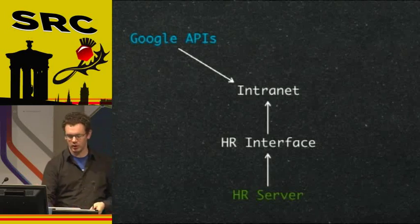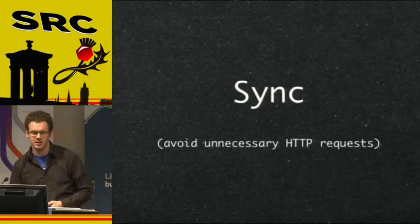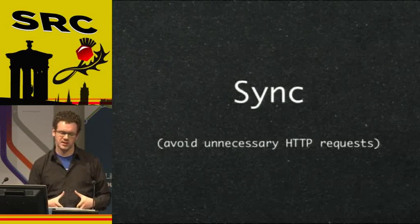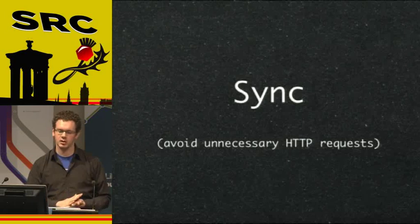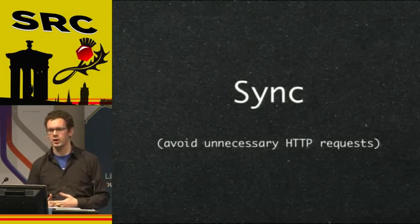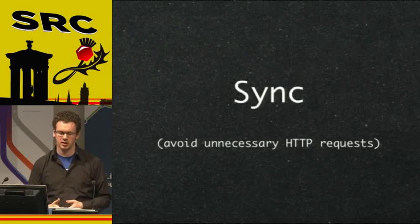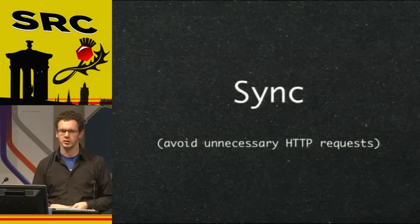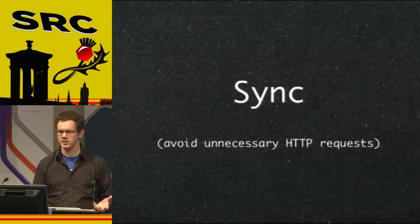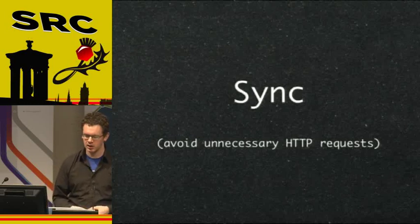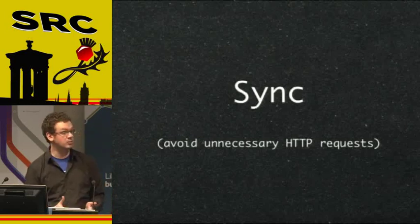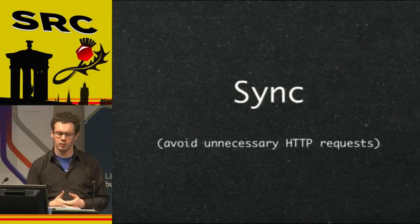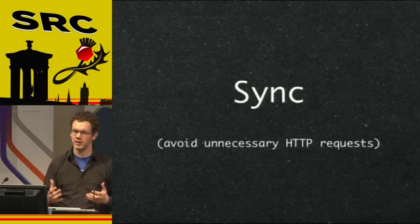What we decided to do was sync the data to our local database every hour. This isn't ideal — the data can be an hour out of date, and some merging rules were quite complex, making this probably the most tested area of the site. But with people data, it didn't really matter if your phone number was out of date by an hour. This was simply the first rule of thumb — reducing HTTP requests. We did one sync in a background cron job on Heroku every hour and served the people pages from the local database.